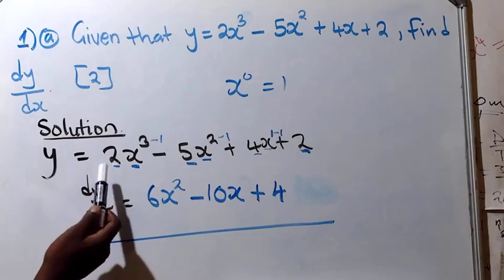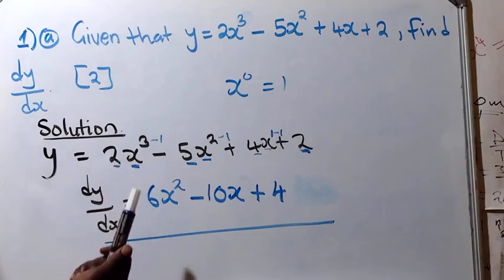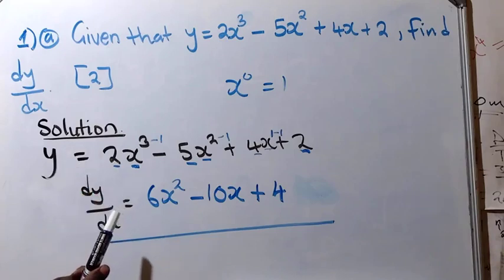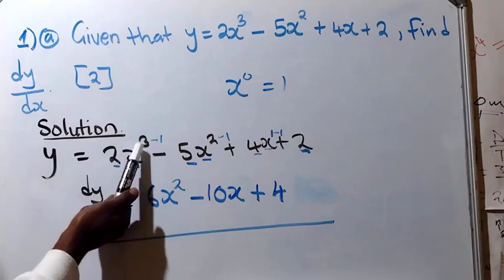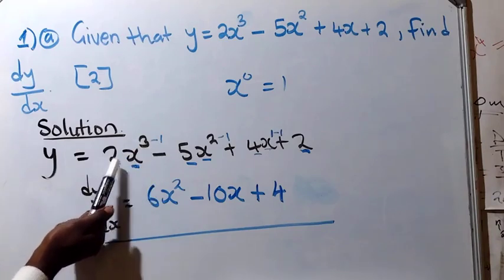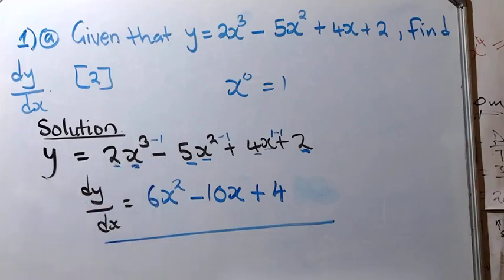Also take note that you have the variable and the coefficient of that variable. The power of the variable — like in this case the power of x was 3 — has to multiply with the coefficient of x. 3 times 2 gives 6. Now we are going to look at another example to see if we've gotten the concept.